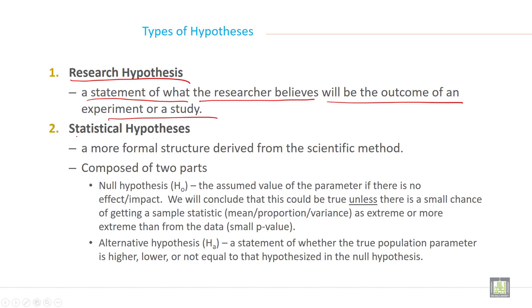Another type of hypothesis is called statistical hypothesis, a more formal structure derived from the scientific method and composed of two parts. Statistical hypothesis has two separate parts: one is called null hypothesis and another one is called alternate hypothesis.